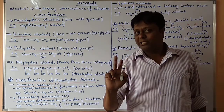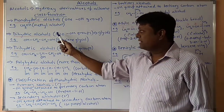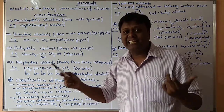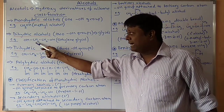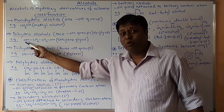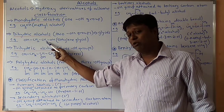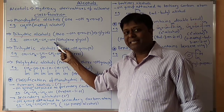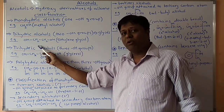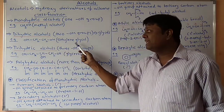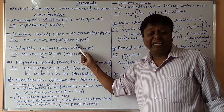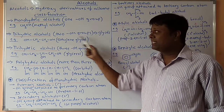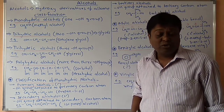Second: dihydric alcohols, where two hydroxy groups are attached. If we consider ethane CH3-CH3, one hydrogen atom is replaced by an OH group and a second hydrogen atom is replaced by a second OH group. This is a dihydric alcohol. The example is ethylene glycol. Dihydric alcohols are also called glycols.